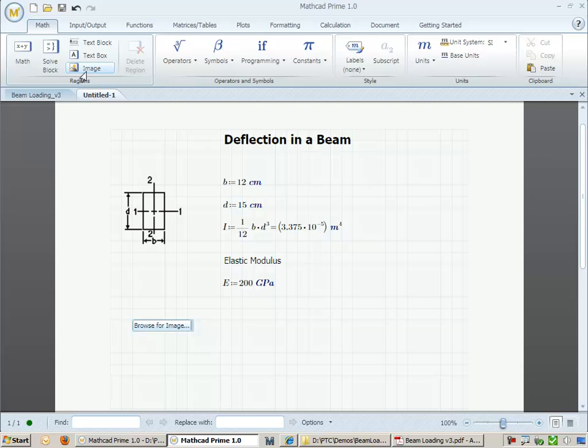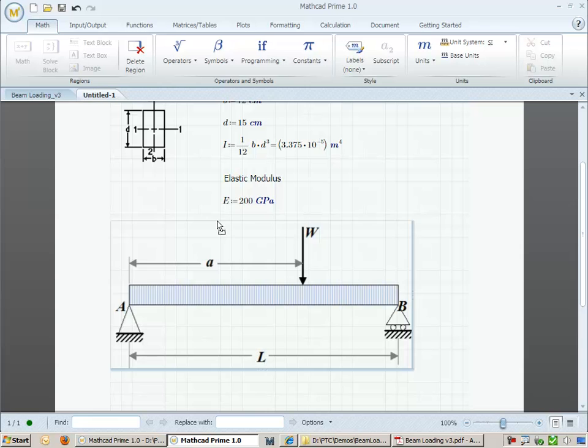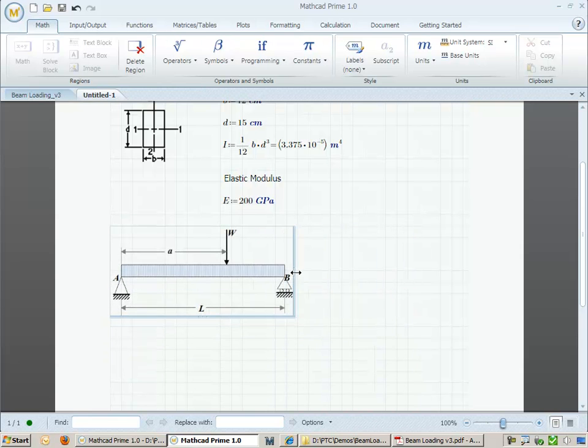We can put in another image to show how the beam is being supported and also where the load is being applied. We will specify a load of 500 N, have a beam of 15 meters, and have that load be applied at 11 meters from the left-hand side.